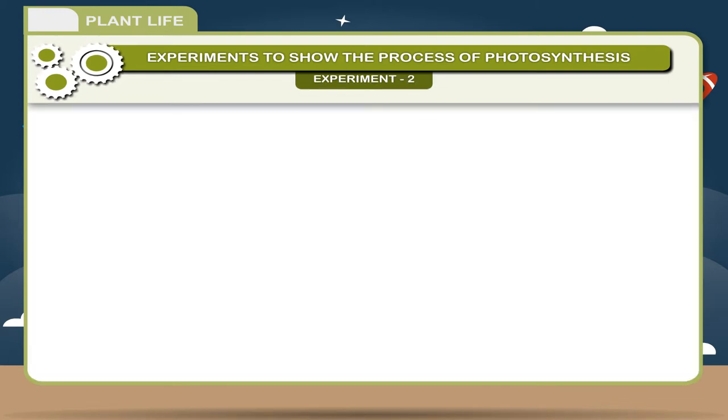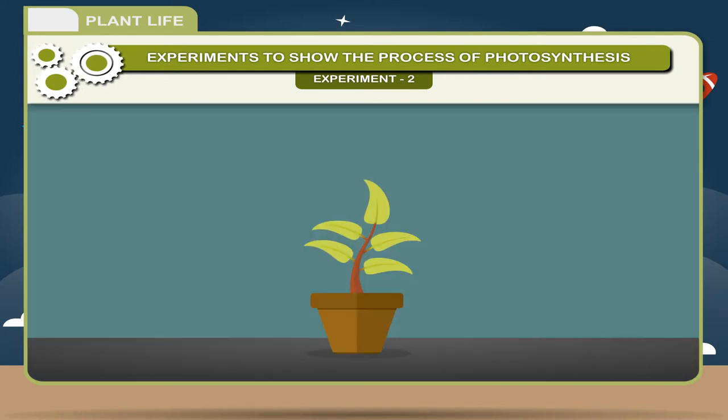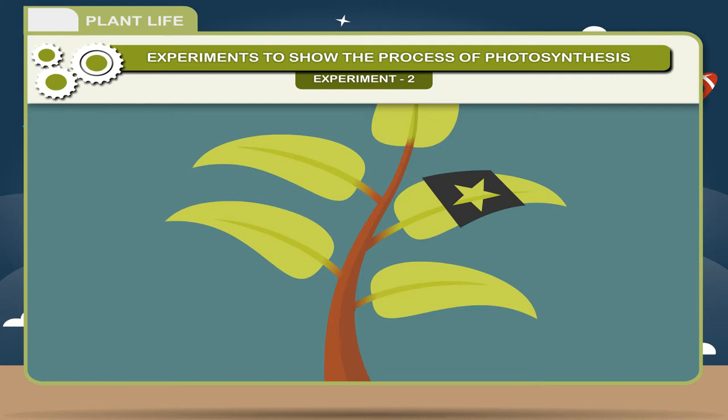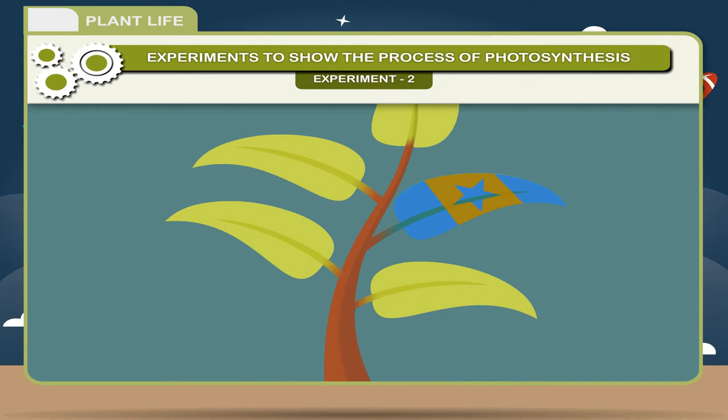Experiment 2: To show that sunlight is necessary for photosynthesis. Take a plant with destarched leaves. Cover one of its leaves with black paper on which a design is cut. Place this plant in the sun. After a few hours, test the leaf which is covered by black paper for the presence of starch. It will be observed that only the parts of the leaf which could get light through the cut-out design, as well as those that were left uncovered by the paper, turn blue-black, showing the presence of starch.